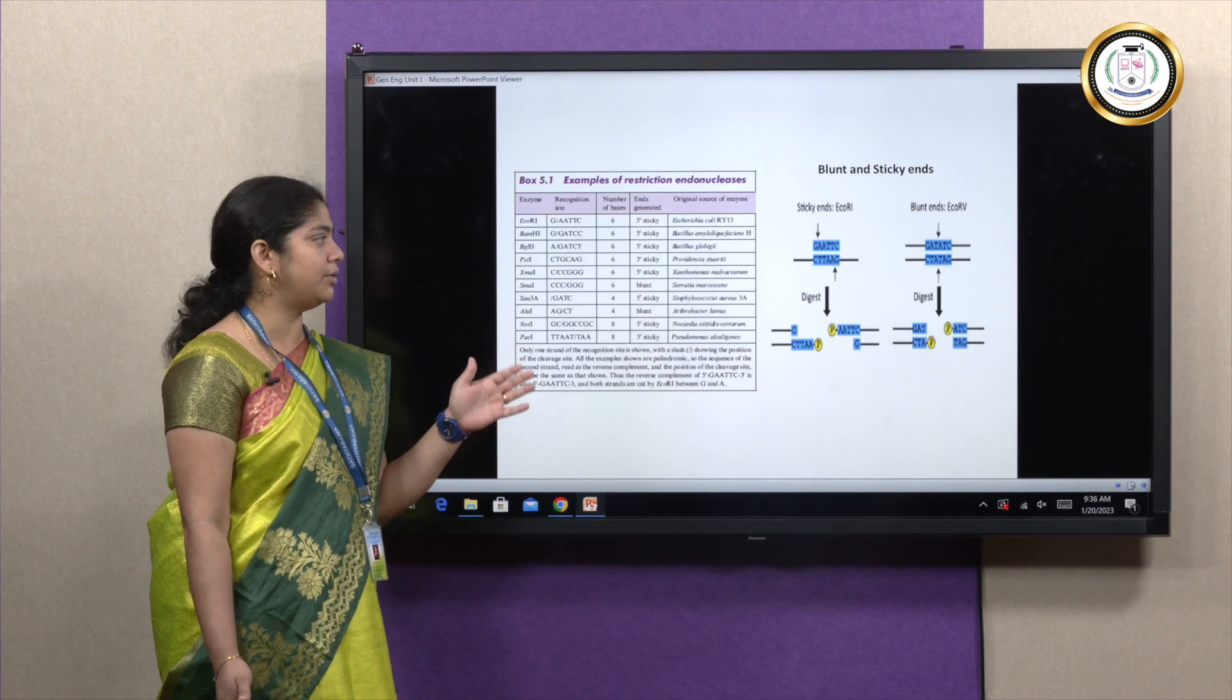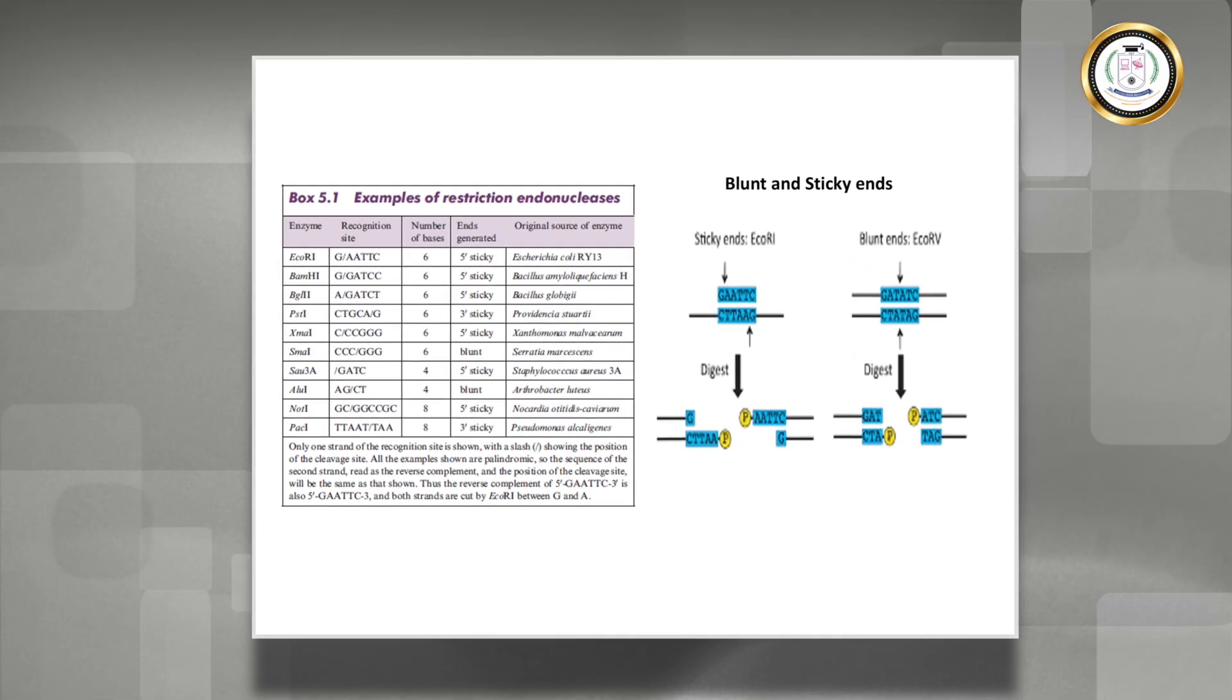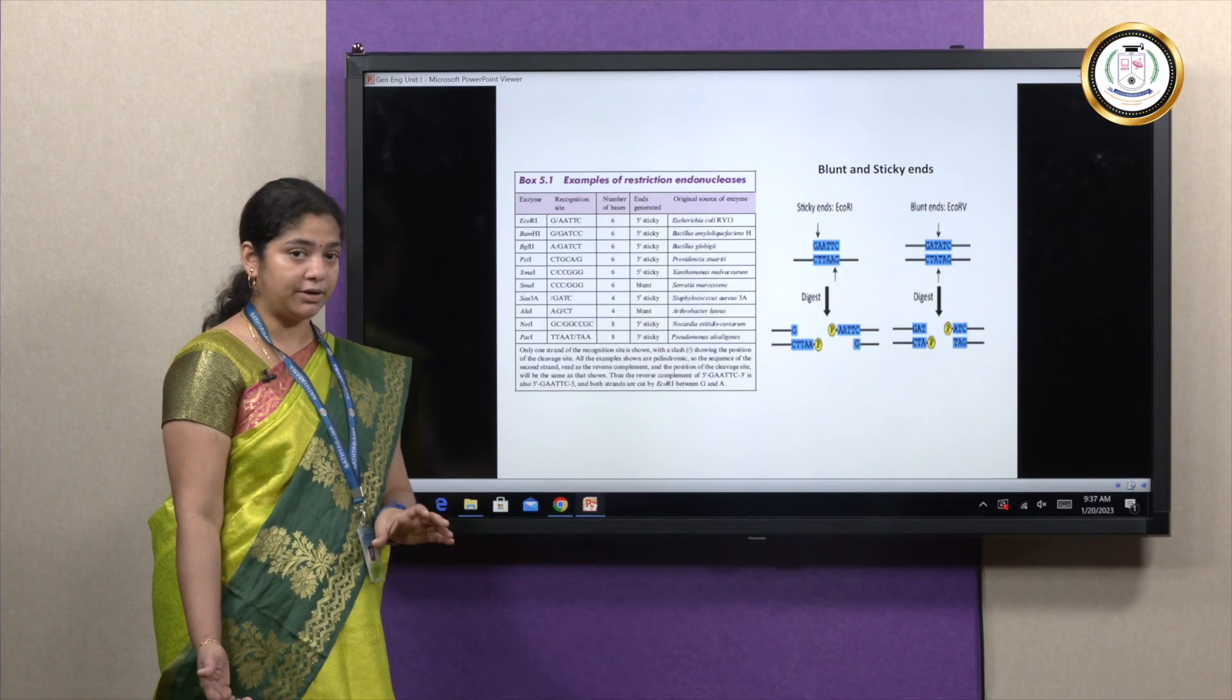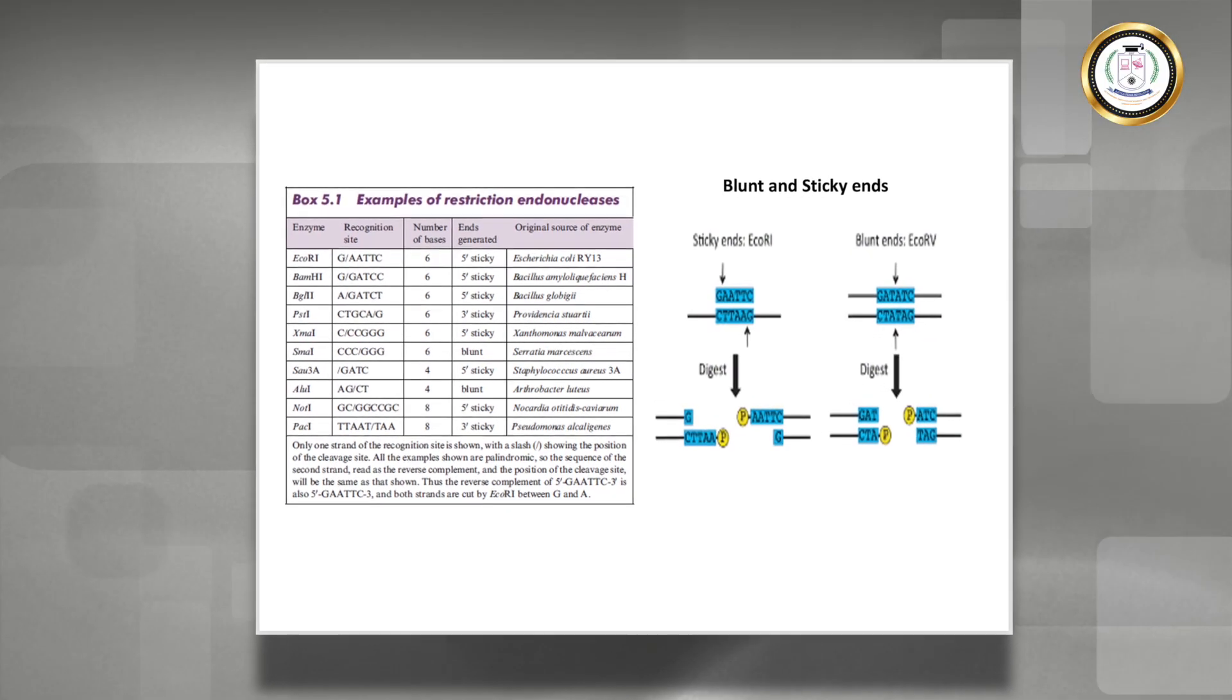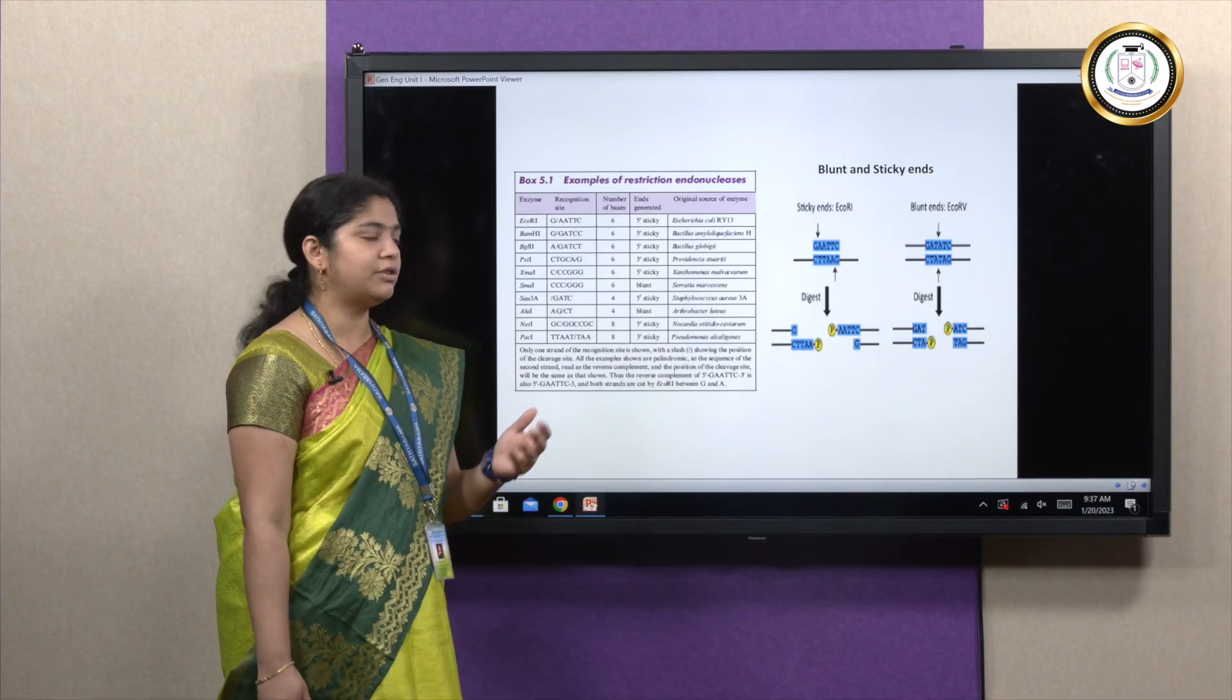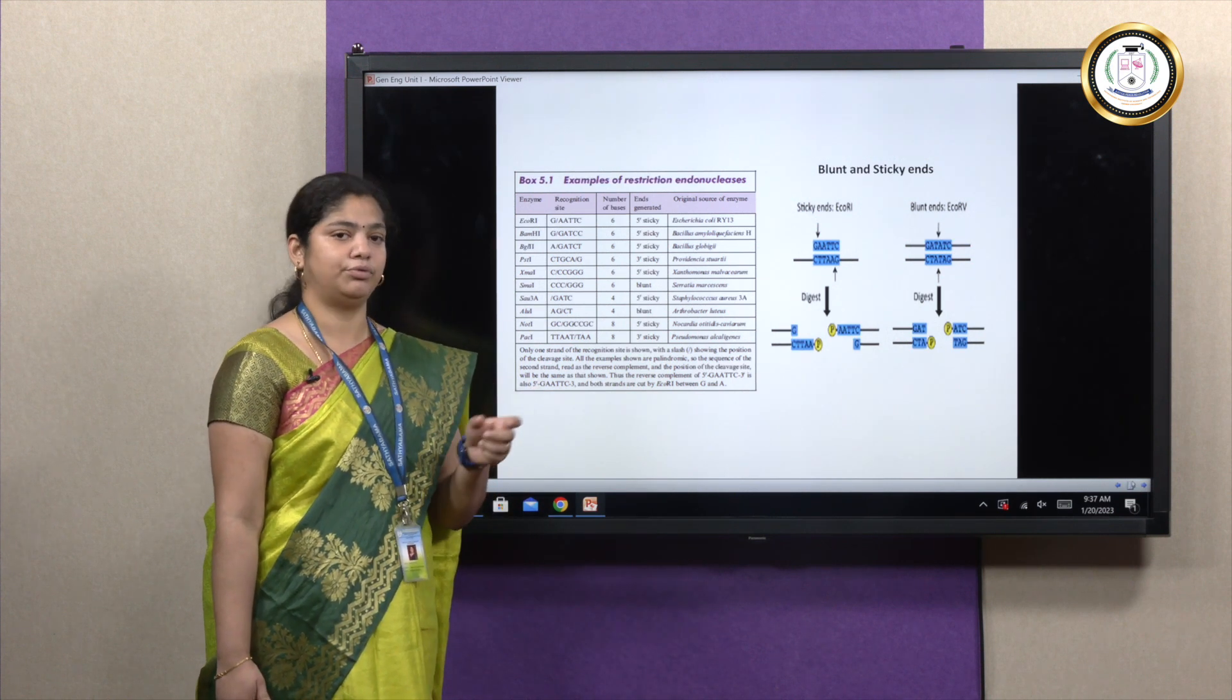In case of sticky ends you can see there is a cut where it leaves overhangs. The sticky ends will have an overhang and an excess nucleotide which is much easier for us to ligate it back together using the target gene sequence, whereas blunt ends cut at a specific site in a perpendicular way so that it releases a blunt end. In case of blunt ends, in some cases we need a linker or an adapter so that it can be used for ligating purposes.